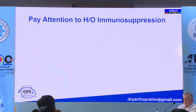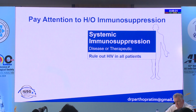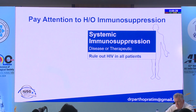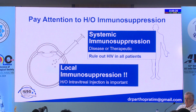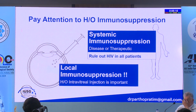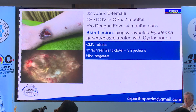When dealing with CMV retinitis, pay attention to the history of immunosuppression — which can be disease-related or therapeutic. Rule out HIV in all patients. In this era of anti-VEGF and diabetic retinopathy treatment, also consider local immunosuppression. Always ask the patient whether there is any previous history of intravitreal steroid injections.